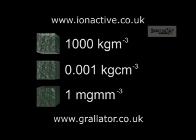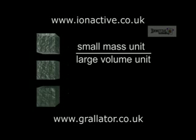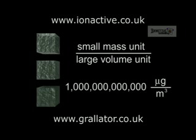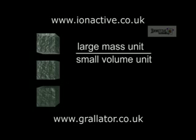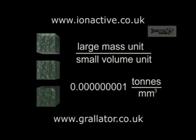Notice how the size of the measure can be made to sound large or small depending on the units used. For a given measure, if you use a small unit of mass divided by a large unit of volume, you make the number large. For example, using mass units of micrograms and volume units of metres cubed, the density of water is 1 trillion micrograms per metre cubed. If you use a large unit of mass divided by a small unit of volume, you make the number small. For example, using mass units of tonnes and volume units of millimetres cubed, the density of water is one billionth of a tonne per millimetre cubed.